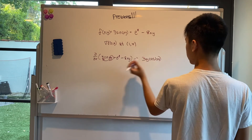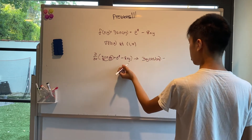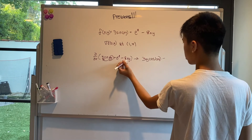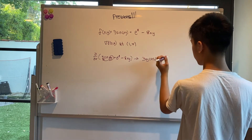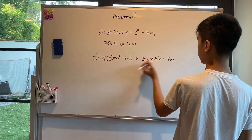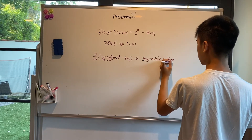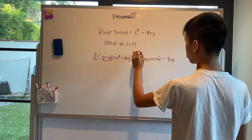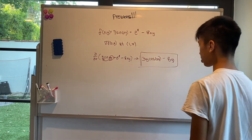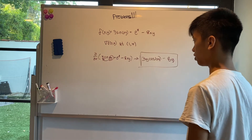And then e⁸ is a constant. Here we treat y like a constant still, so we just take the derivative of x. So we end up getting 3y·cos(xy) − 8y.